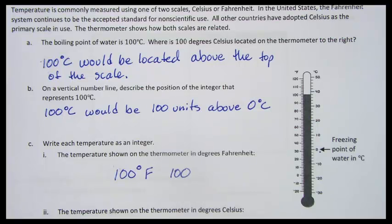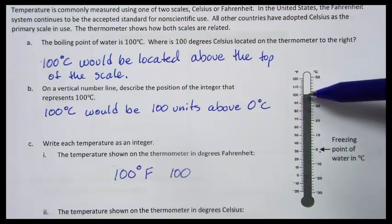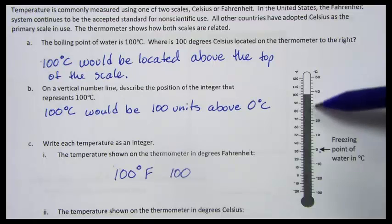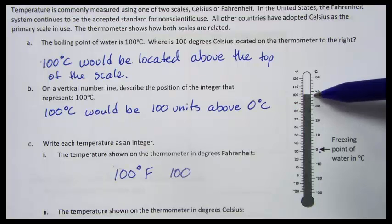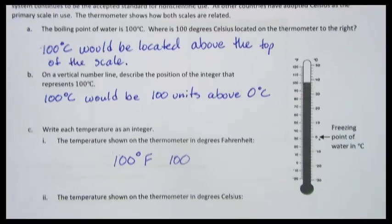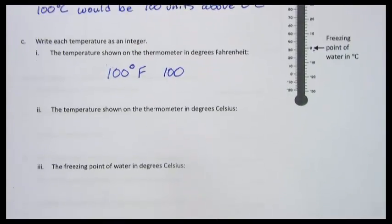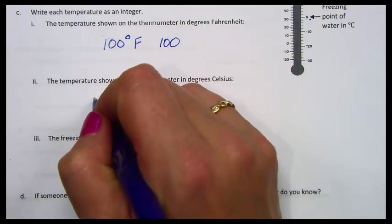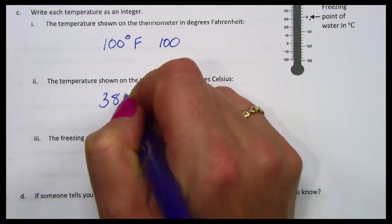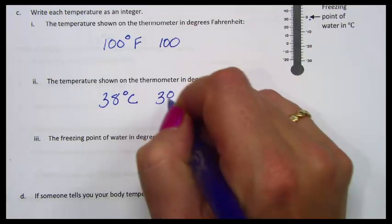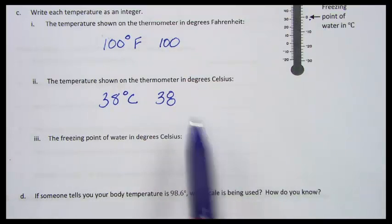The temperature shown on the thermometer in degrees Celsius is the next thing they ask us. Here on this, at 100 degrees Fahrenheit, that's the same as 38 degrees Celsius. As you can see they're counting by 2's. 30, 32, 34, 36, 38, 40. So this is 38. 38 degrees Celsius or the temperature 38 or the integer 38.